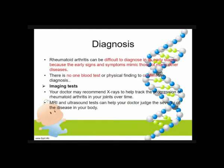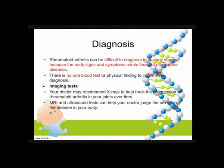Diagnosis for your rheumatoid arthritis can be very difficult, because at its early stages the symptoms are small and may mimic other bone problems, making it hard to detect. There is no single blood test or physical finding to confirm the diagnosis. For imaging, the doctor may recommend conventional X-ray to track the progression of rheumatoid arthritis in the joints over time. MRI and ultrasound can also help judge the severity of the disease. The best method to demonstrate RA is your PA oblique projection of the hand, or the Norgaard method.